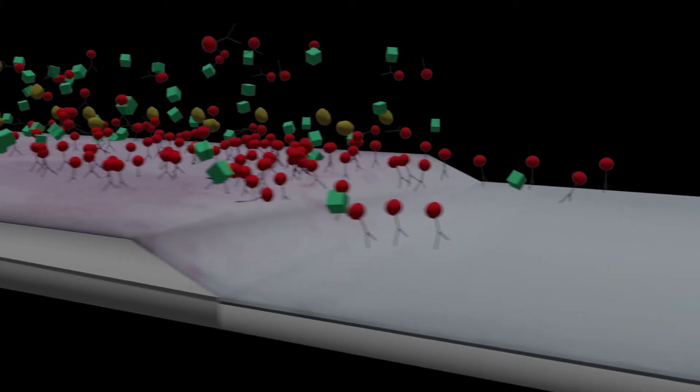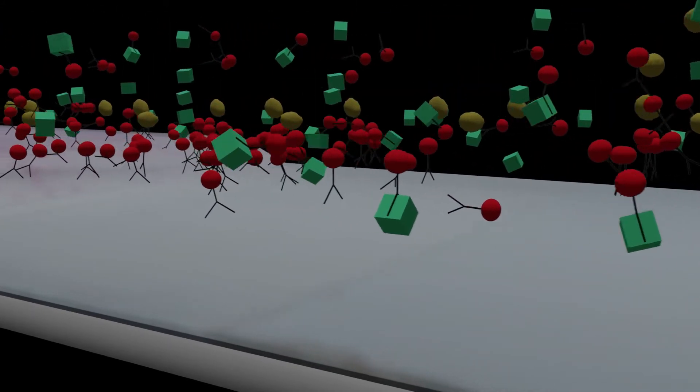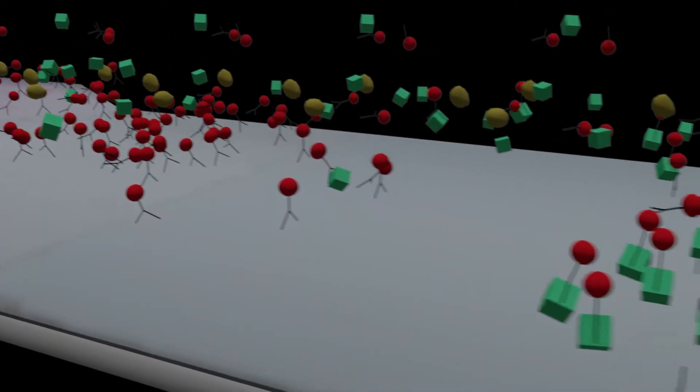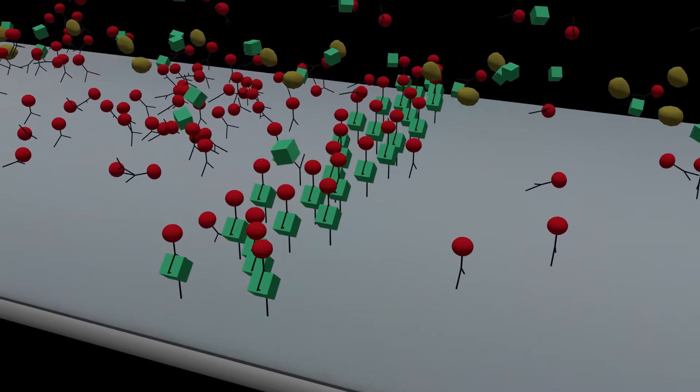Target allergens contained in the sample bind to the color-labeled antibody. Together, these bind to the antibody on the test line, forming an antibody-target allergen-antibody sandwich.